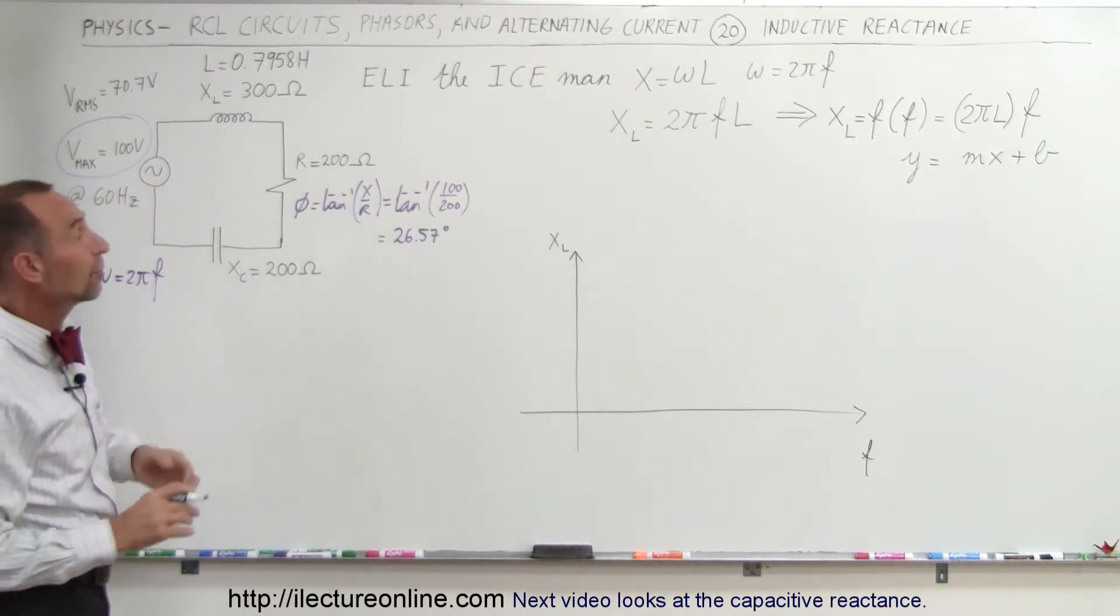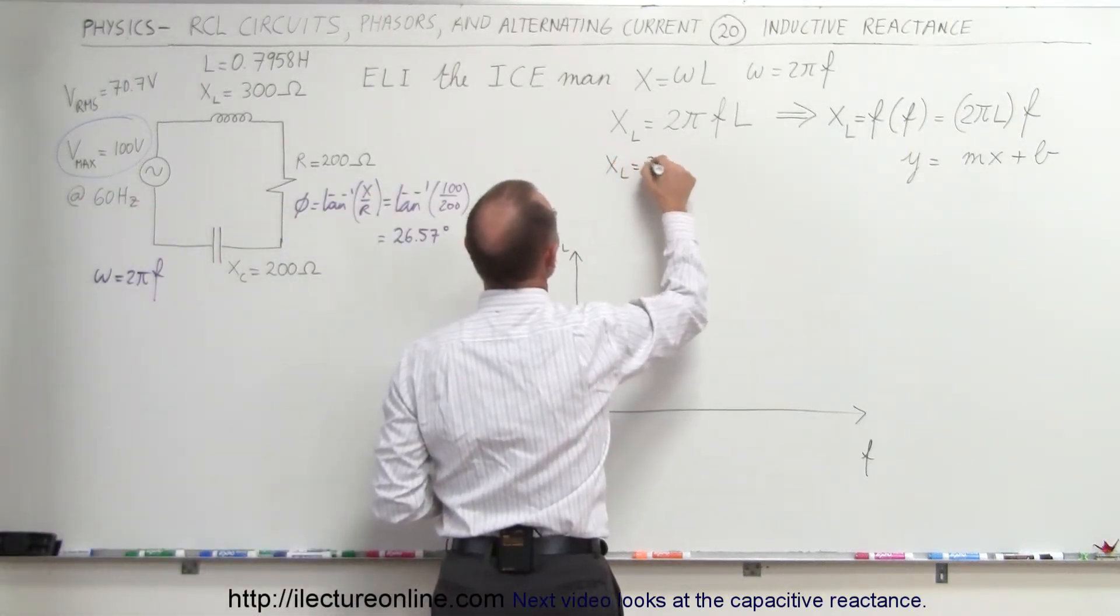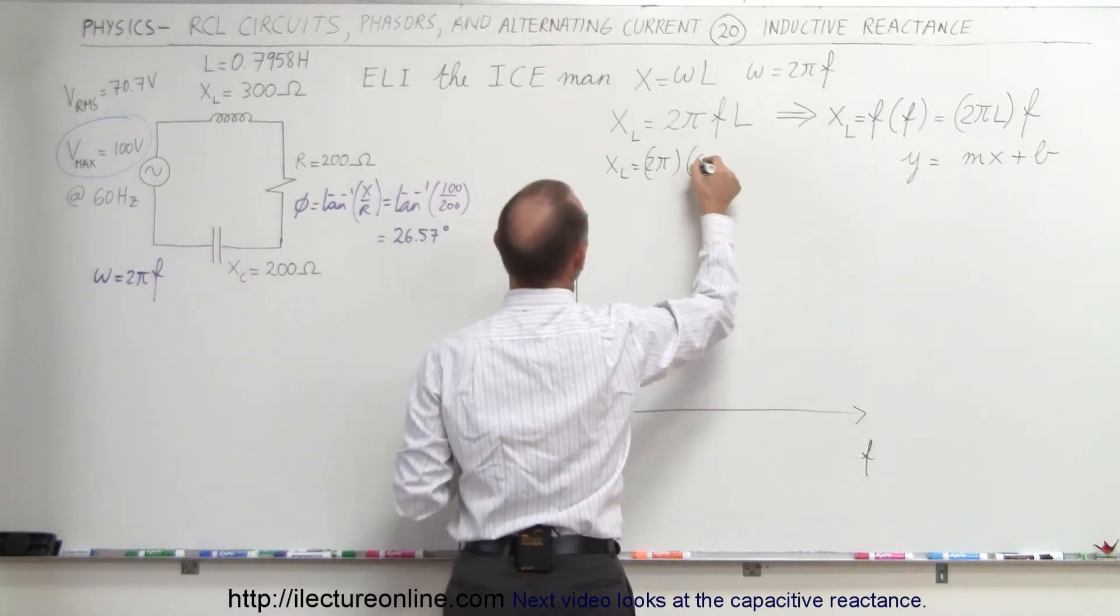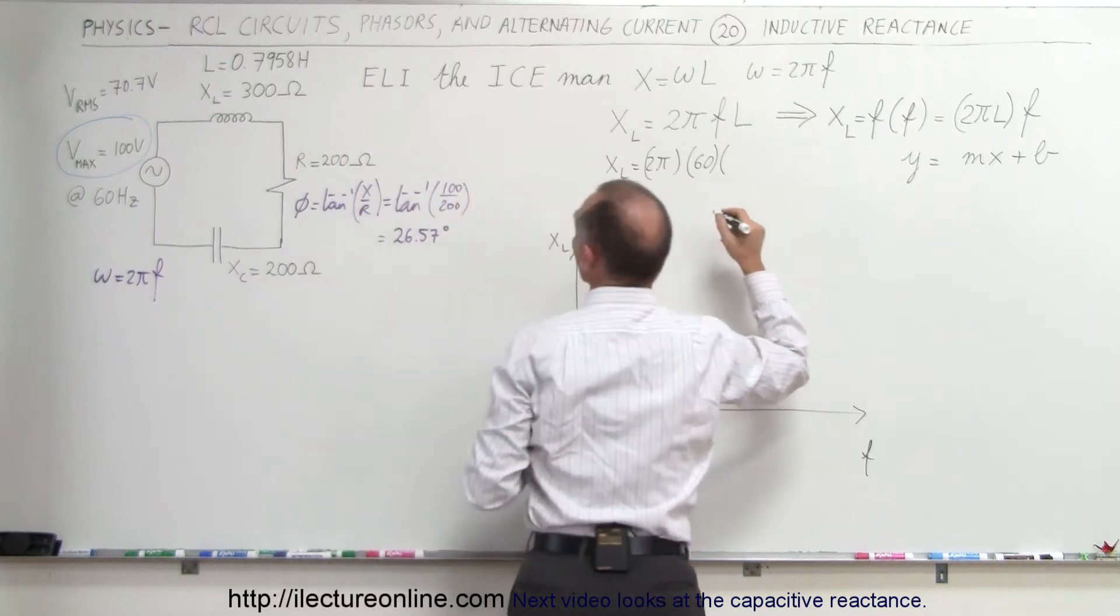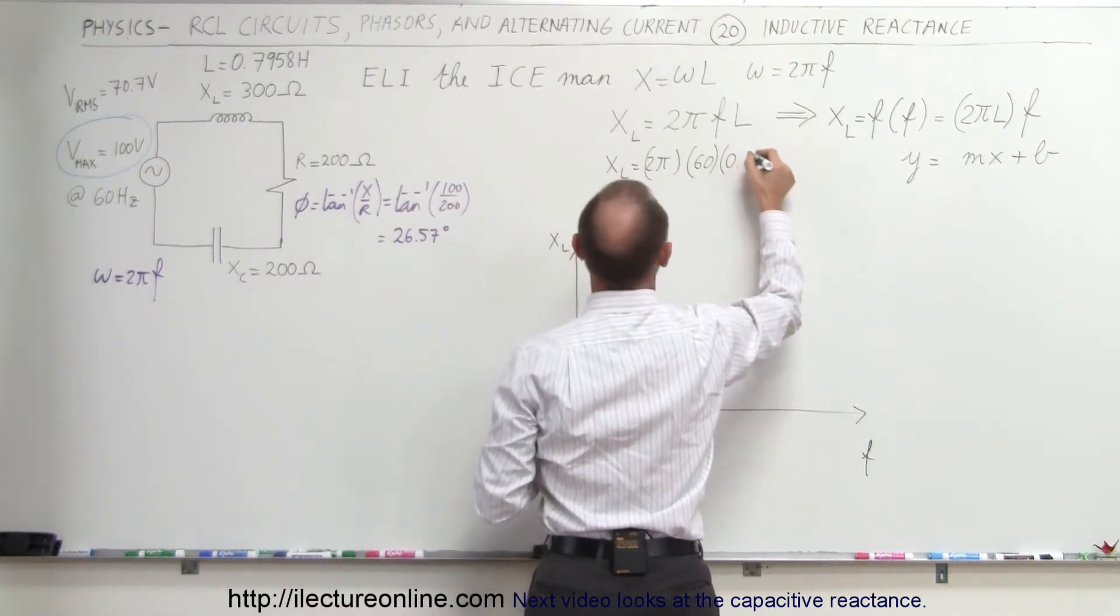So how do we calculate the inductive reactance? Well, here's the equation. We can say XL is equal to 2π times the frequency. In our example, the frequency is 60 hertz, and the self-inductance, the inductance of the inductor, is 0.79...